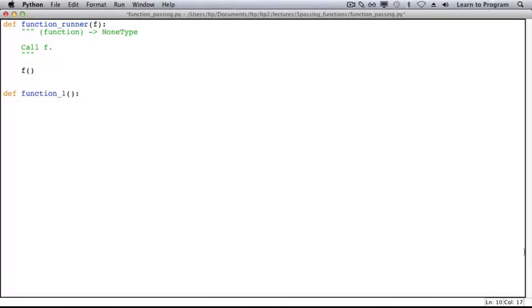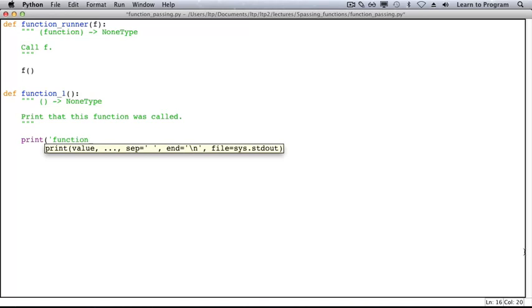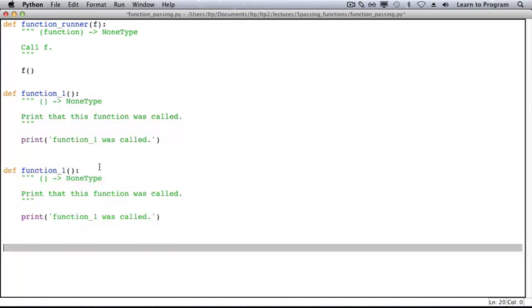Here, we define a function that we're going to pass to functionrunner in just a little bit. Because this is just a demonstration, all we'll do inside here is print that the function was called. Let's add one more function just like this one.